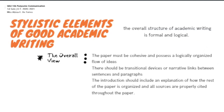Proceeding to stylistic elements of good academic writing. The first is the overall view. This is the overall structure of academic writing that is formal and logical. Hence, the paper must be cohesive and possess a logically organized flow of ideas. This suggests that the various parts are connected to form a unified whole. When the parts of the whole paragraph work or fit together well, they are called cohesive. Also, there should be transitional devices or narrative links between paragraphs and sentences, so the reader is able to follow your argument.